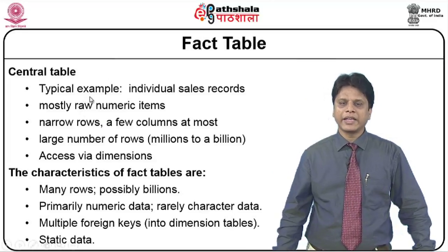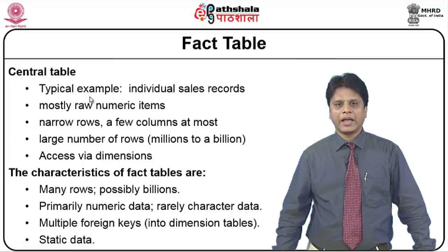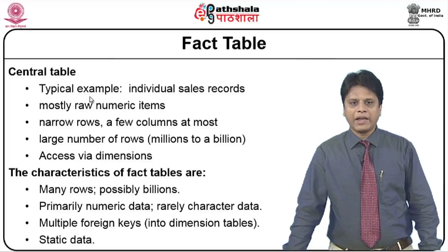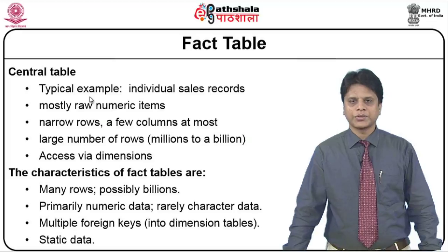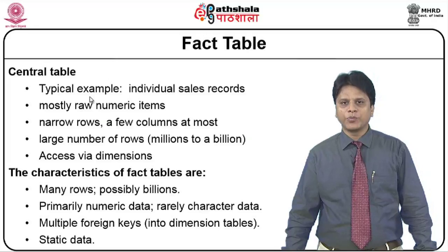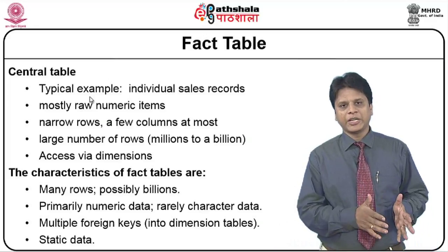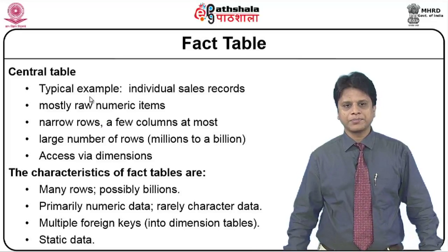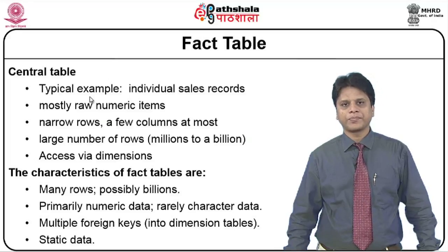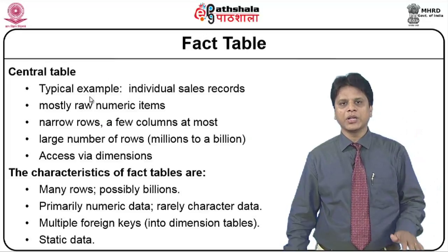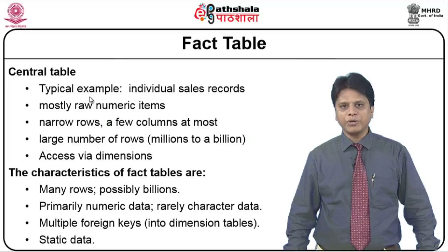A typical example of this central fact table would be individual sales records. This fact table stores mostly raw numeric items rather than character-based items. It will have narrow rows — a few columns at most — and a large number of rows, from million to billion, because it involves multiple dimensions. It is accessed via different dimensions. Fact tables can take up many rows from million to billion records, concentrate majorly on numeric data, and involve multiple foreign keys, whereas dimension tables handle only the primary key. All data available in the fact tables is static data.